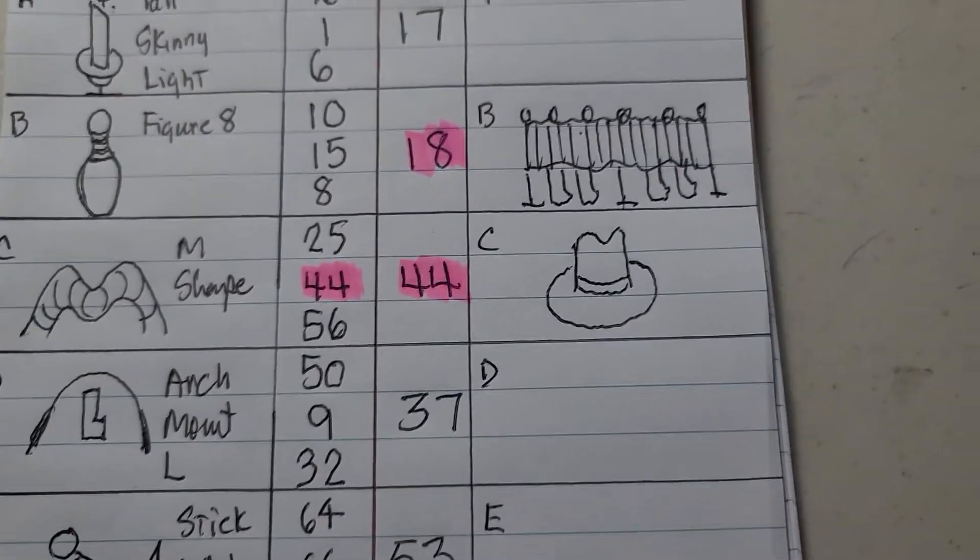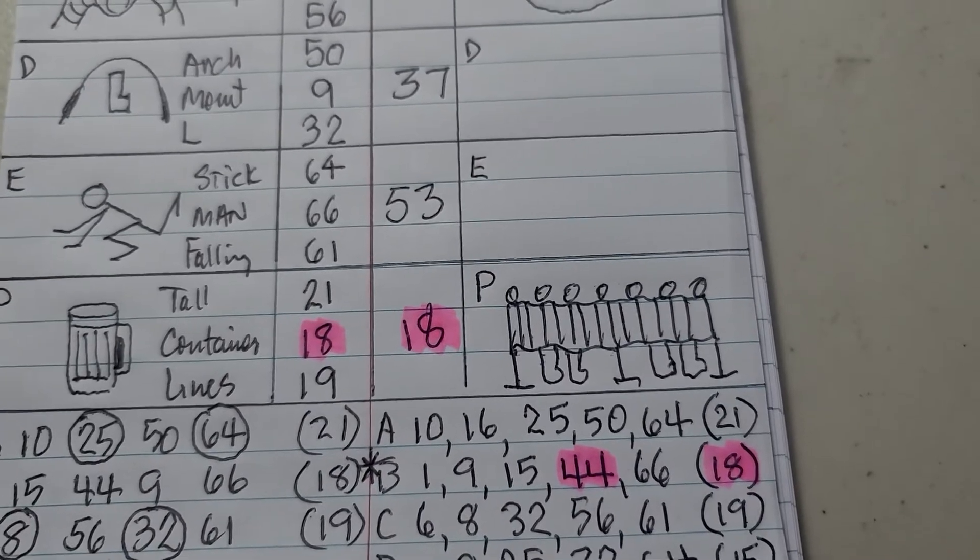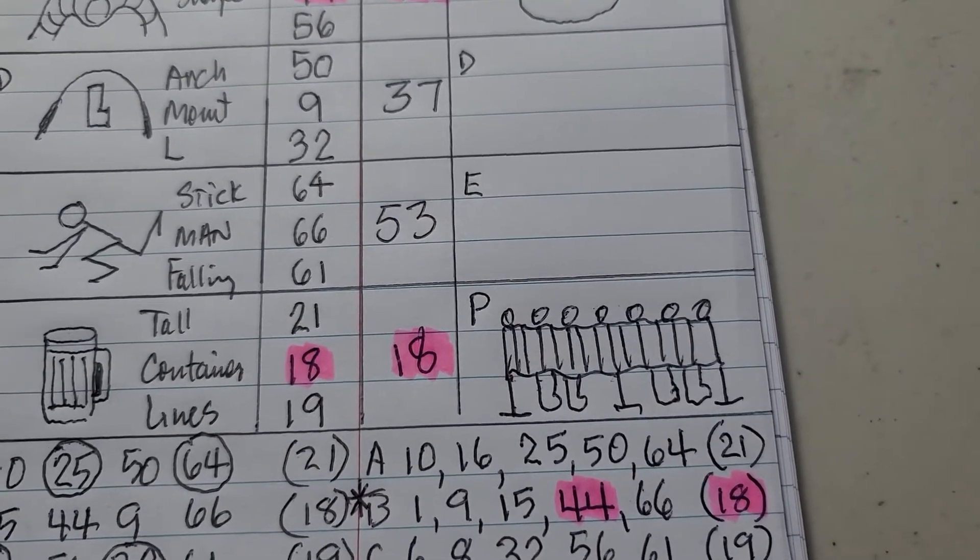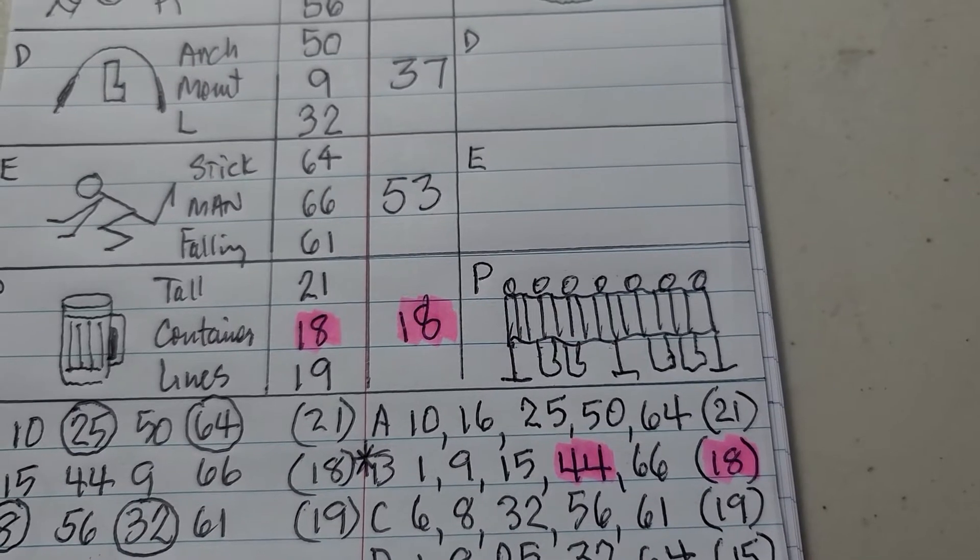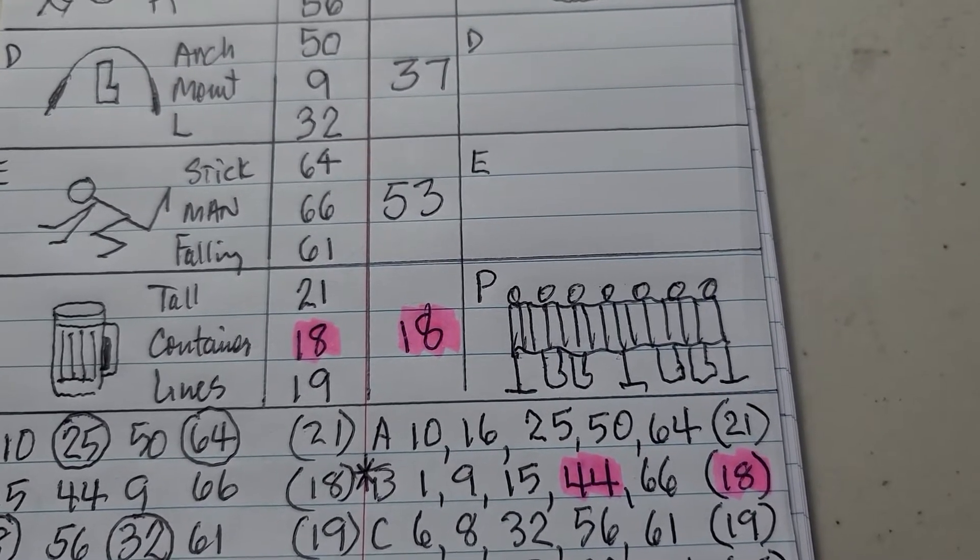18 hit twice, as a regular number and as the Powerball. So 18 has been showing up as a Powerball quite frequently.